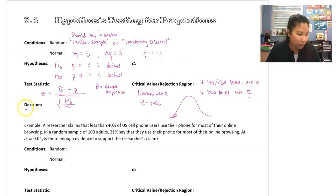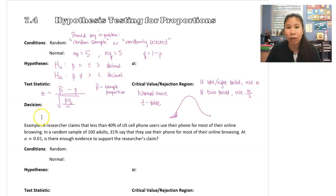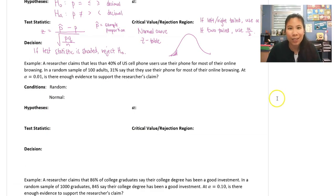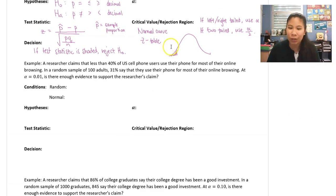Our decision is the same: if our test statistic is shaded in the rejection region, we reject Ho. If it's not shaded, we fail to reject Ho. Let's do an example together so we can see how to use the critical values and make decisions.